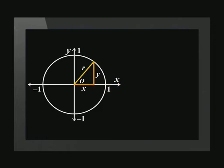Have you figured out why the identity is called the Pythagorean or squares identity? Pythagoras' theorem is about the relationship of the squares on the sides of any right-angled triangle. Here, the side labelled y is perpendicular to the x-axis, which means that we have a right-angled triangle.